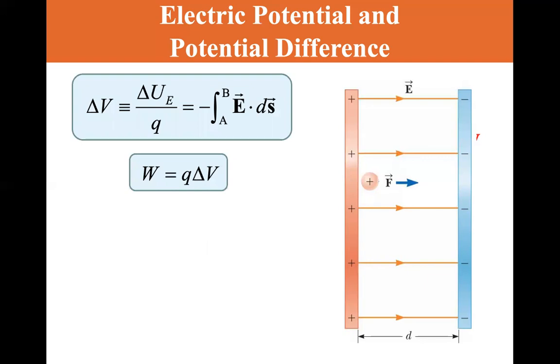And work is equal to q delta V. And one volt is equal to, it's defined as one joule per coulomb. And we also learn that one Newton per coulomb is equal to one volt per meter. Joules is Newton meters. So one volt equals one Newton meter per coulomb. And you take the meter to the other side, you get one Newton per coulomb equals one volt per meter.